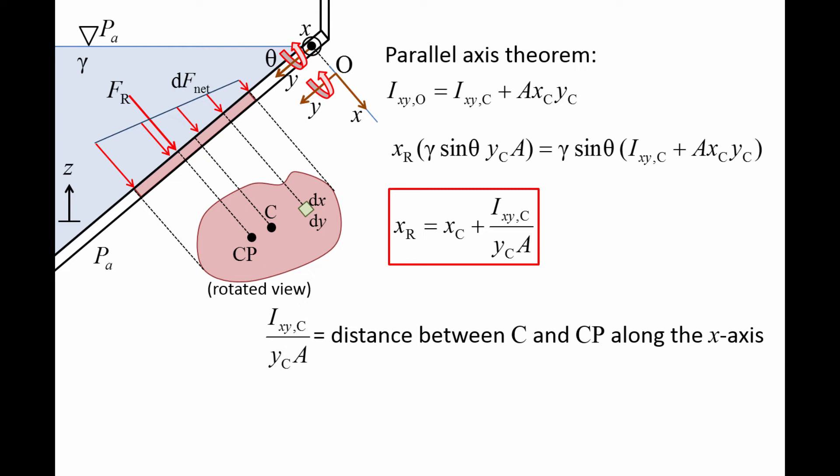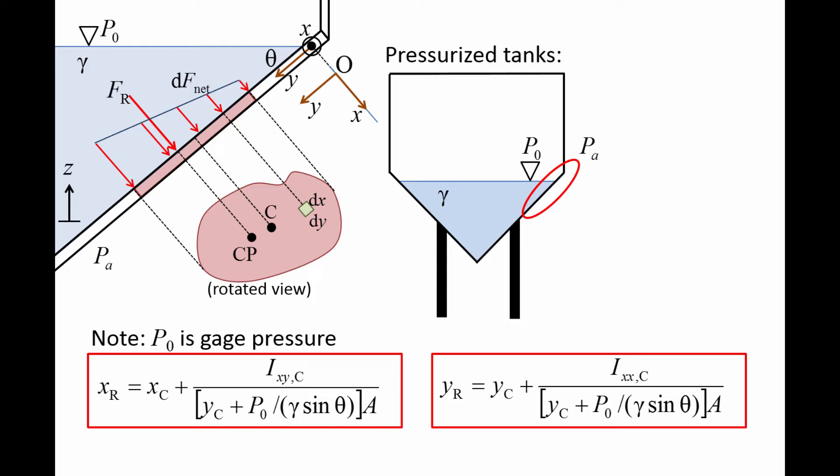For many problems in fluid mechanics, it will not be necessary to calculate XR. Although not derived in this video, for closed tanks that are pressurized to a gauge pressure P-naught, the equations for XR and YR need to be modified slightly. XR becomes XC plus IXYC divided by the quantity YC plus P-naught divided by gamma sine theta, times A. YR becomes YC plus IXXC divided by the quantity YC plus P-naught divided by gamma sine theta, times A. We will now list the equations for the area, IXXC, IXYC, and the location of the centroid for common shapes.